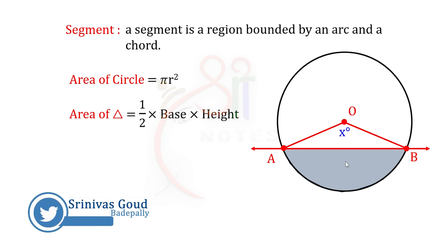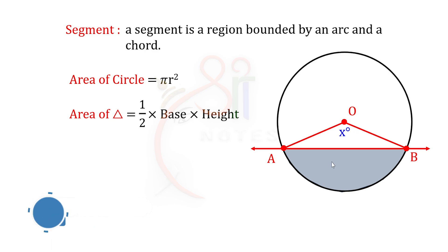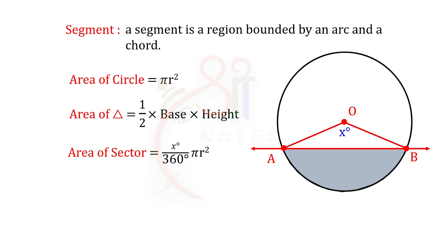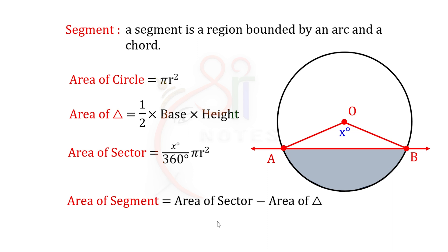We have the total sector OAB and the segment. The area of the sector formula is x by 360 into pi r squared, which gives us the total area. Therefore, the area of segment is equal to area of sector minus area of triangle.